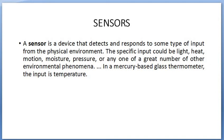The specific input could be either light, heat, motion, moisture, pressure, or any one of a great number of other environmental phenomena. For example, a thermometer's input is temperature — that is what the sensor senses — and we have mercury in the thermometer as the sensing element.